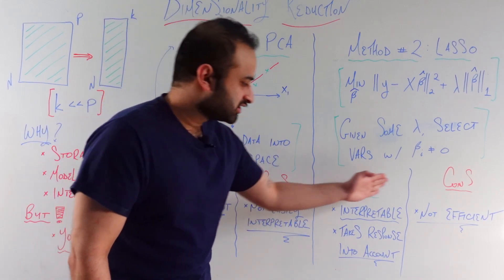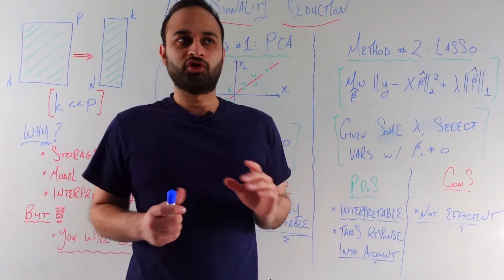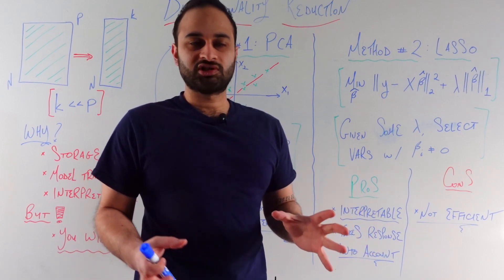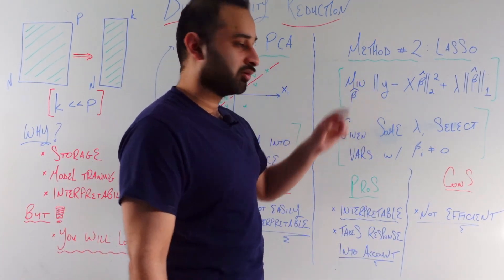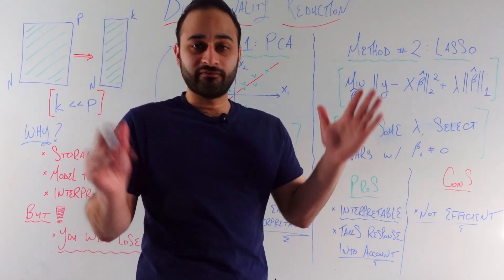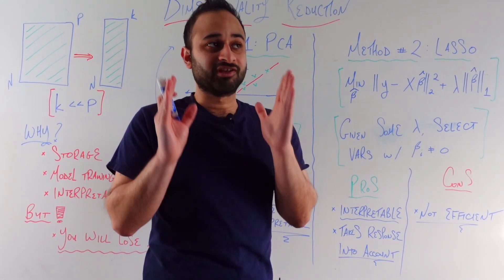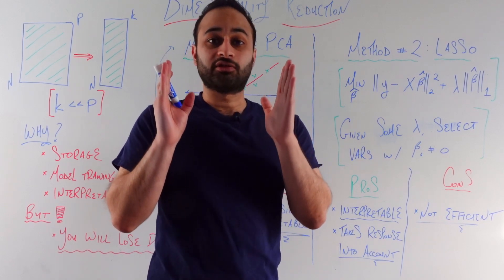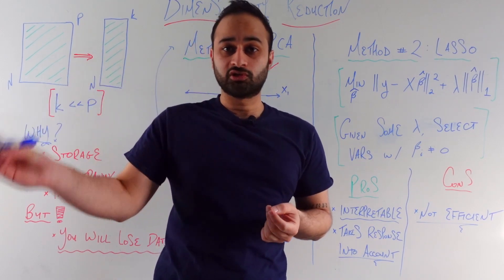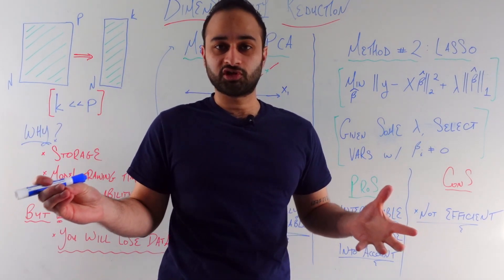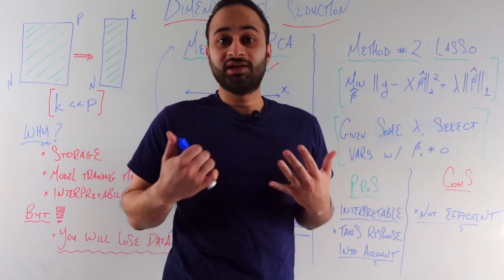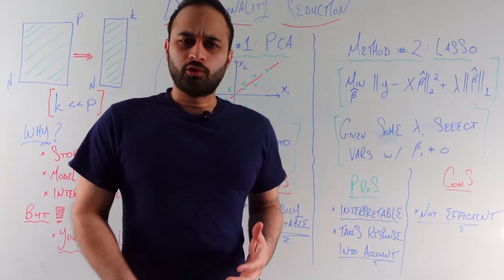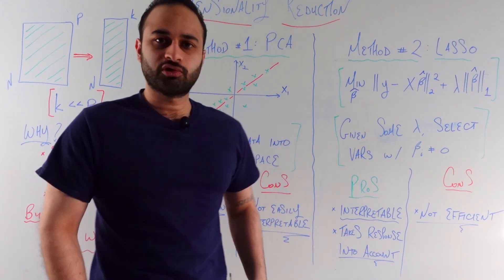So the pros here are that this is interpretable. Notice we're not projecting our data into any dimensional space. We're simply just eliminating columns that are not helpful in predicting this target variable y. And so at the end of the day, we have a smaller set of columns. But the key observation is that those columns are coming from the original dataset itself. We're not transforming the features. So you can just say, oh, this column was important, this column got thrown away. Easy to interpret.